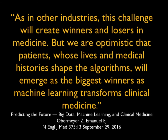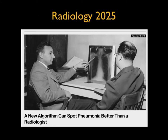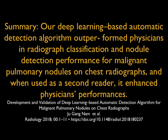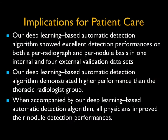You can see things that are coming on a weekly basis. A new algorithm can spot pneumonia better than a radiologist. This article talks about the ability to detect pulmonary nodules and determine benign from malignant, perhaps as a second reader. A deep learning-based detection algorithm can outperform physicians in radiographic classification and nodule detection for malignant pulmonary nodules on chest radiographs, and when used as a second reader, it enhances physician performance. When accompanied by the deep learning-based algorithm, physicians improve nodule detection.